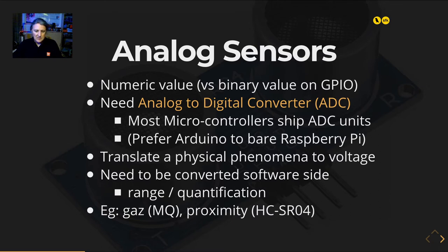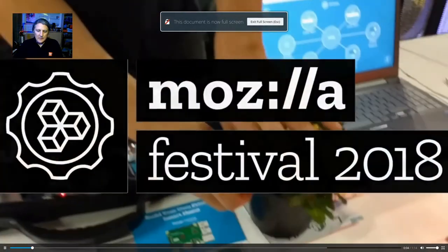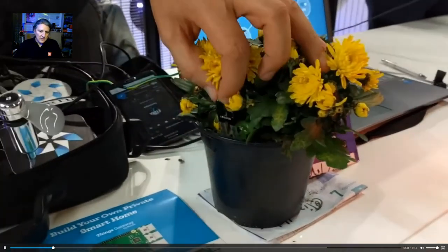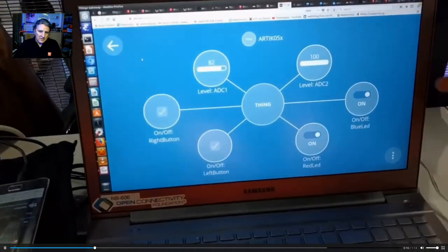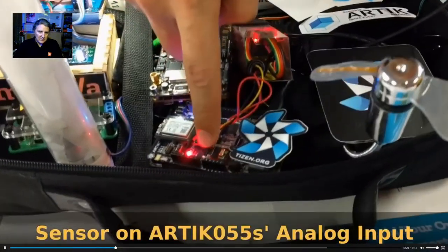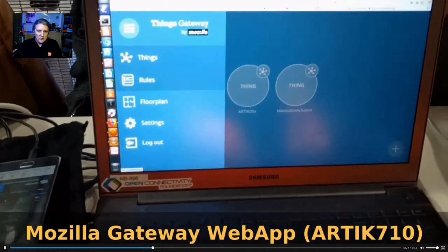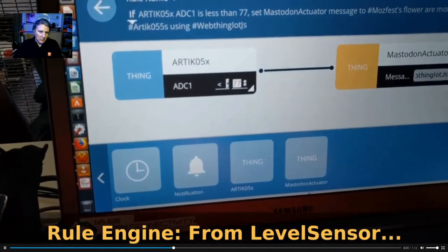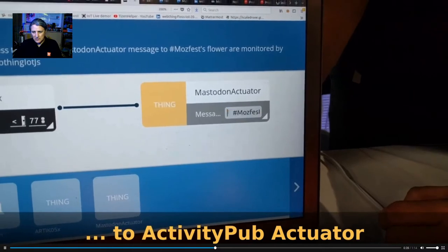Some analog sensor examples: there are gas sensors like MQ sensors, and proximity sensors (radar), which are quite popular. Here is a short demonstration — I'm monitoring the moisture of the soil for a flower. With 82% humidity measured, it's connected to the analog input pin of a microcontroller board. In my application, when the input is below a threshold, I send a notification to the Mastodon network — a social network used in an IoT context.